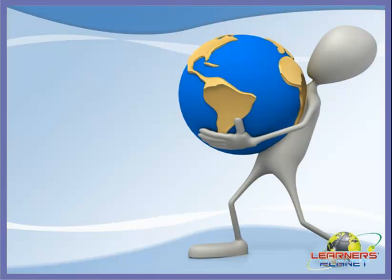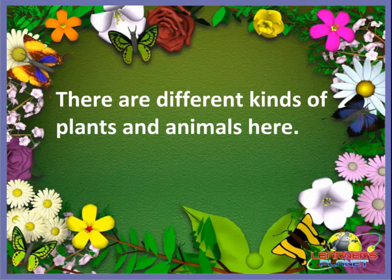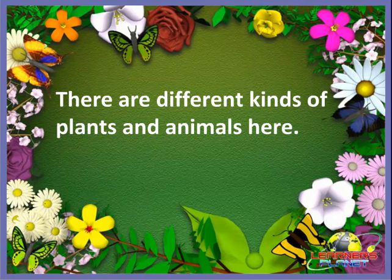Our Earth is a very beautiful place. There are different kinds of plants and animals here. Our Earth is the only living planet on which we can see different kinds of plants and animals — for example, many different kinds of plants like shrubs, creepers, climbers, and many animals like domestic animals, wild animals, birds, etc.